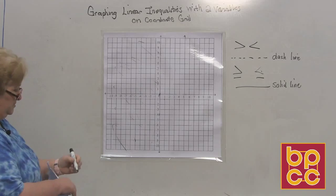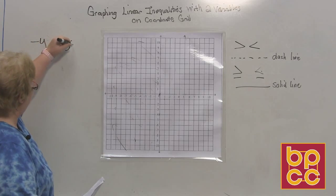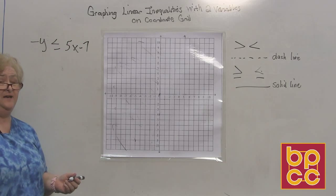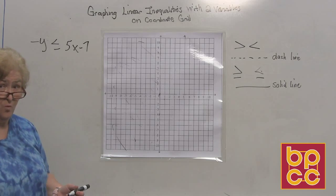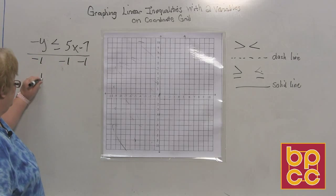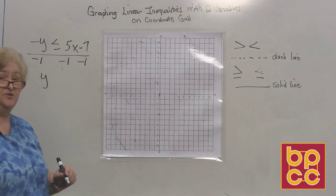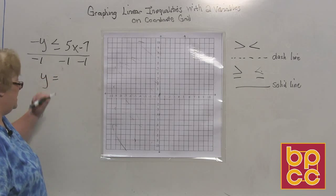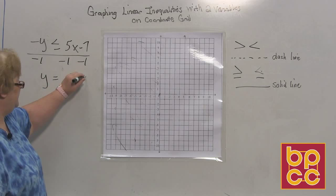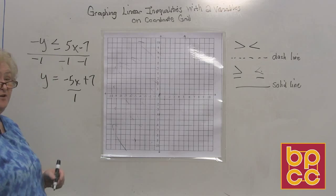Let's try this next one: negative y is less than or equal to 5x minus 7. Though that's almost in slope-intercept, we need to divide by negative 1 across the board because we don't graph when we have a negative y. Dividing by negative 1, we now have y. I'll put equal for now and worry about the sign in a minute. So we now have negative 5x, and two negatives make a positive 7. I need to know what the sign is so I know whether to draw a solid or dashed line.